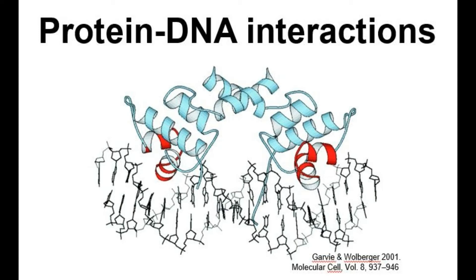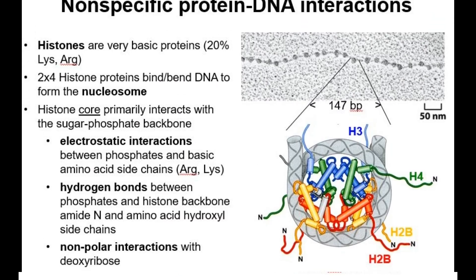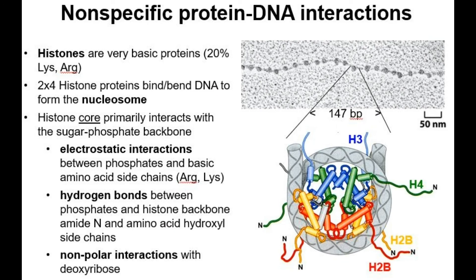The other class of interaction is called the non-specific interaction, in which proteins bind to the DNA irrespective of the sequence. In this category, the available information is restricted to a few complexes that could be successfully crystallized, and we will discuss a few of those in this video.